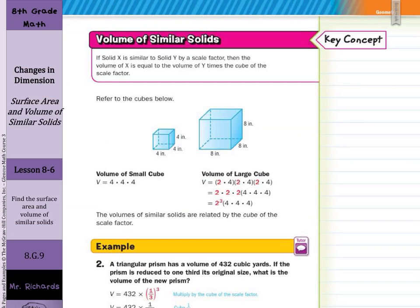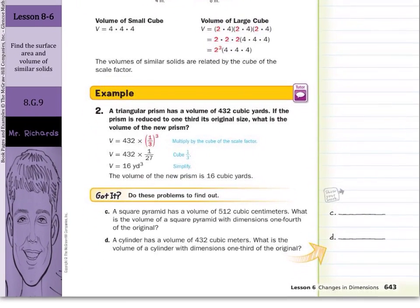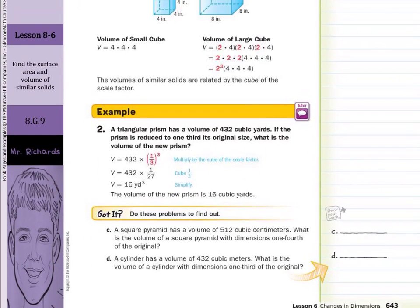What about the volume of similar solids? If solid X is similar to solid Y by a scale factor, then the volume of X is equal to the volume of Y times the cube of the scale factor. And so we'll take the scale factor and cube it. And when we look at our guided example, the triangular prism has a volume of 432 cubic yards. If the prism is reduced to one-third its original size, what is the volume of the new prism? Well, one-third is our scale factor, cubed is 1/27th, multiplied by the original, and you get 16.